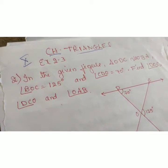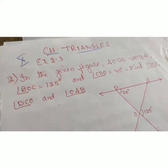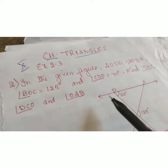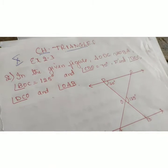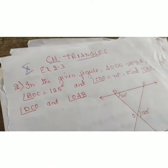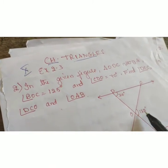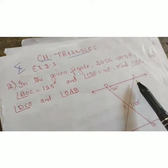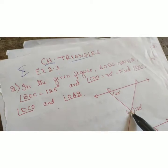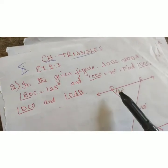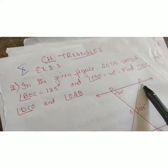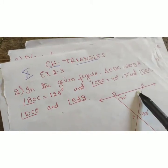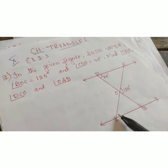The second question: in the given figure, triangle ODC is similar to triangle OBA. Given angle BOC is 125 degrees and angle CDO is 70 degrees, find angle DCO and also find angle OAB.